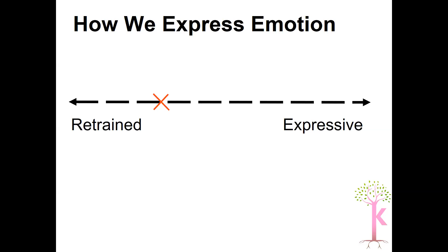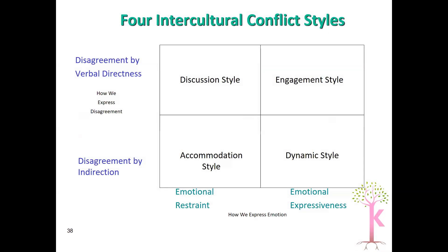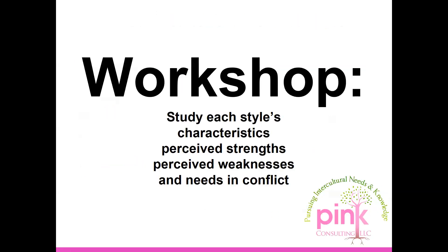Given those four characteristics — direct or indirect, expressive or restrained — you fall into one of four conflict styles: engagement, discussion, accommodation, and dynamic. In the workshop on the 25th, we'll go into more detail about each style, what their strengths are, their perceived weaknesses as seen by other styles, and we'll watch videos to practice how you might handle conflict with people in those different styles.